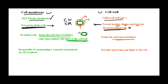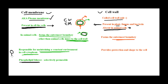The cell membrane is responsible for maintaining a constant environment in the cytoplasm. As we saw in the previous video, the cell membrane is made up of a phospholipid bilayer with a head and tail structure. This phospholipid bilayer is selectively permeable, meaning it is involved in the transport of molecules required by the cell. It selectively allows what molecules are needed in and out of the cell and in what quantity. So the main function of the cell membrane is to maintain the internal environment of the cell.